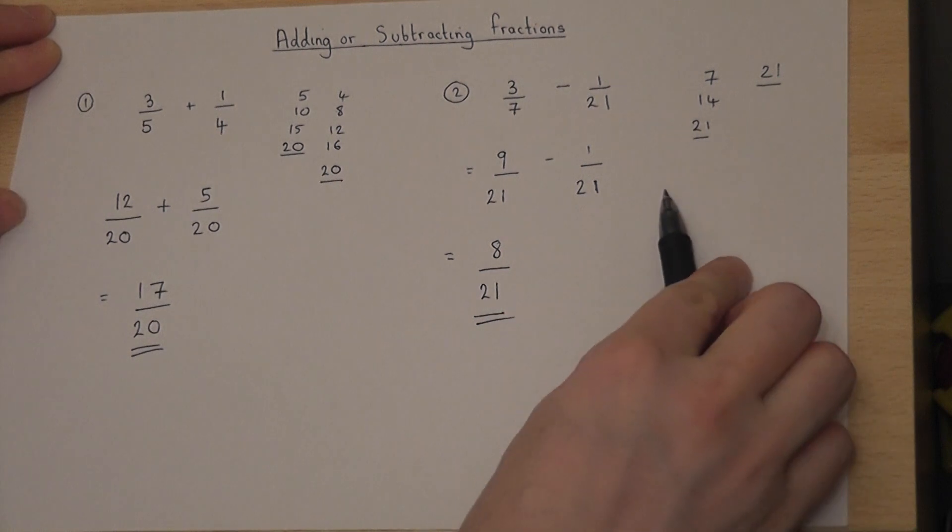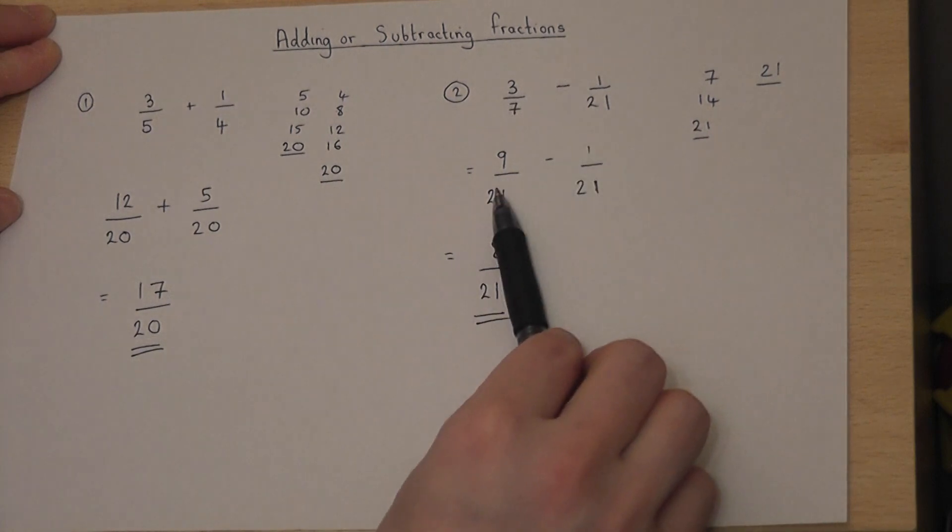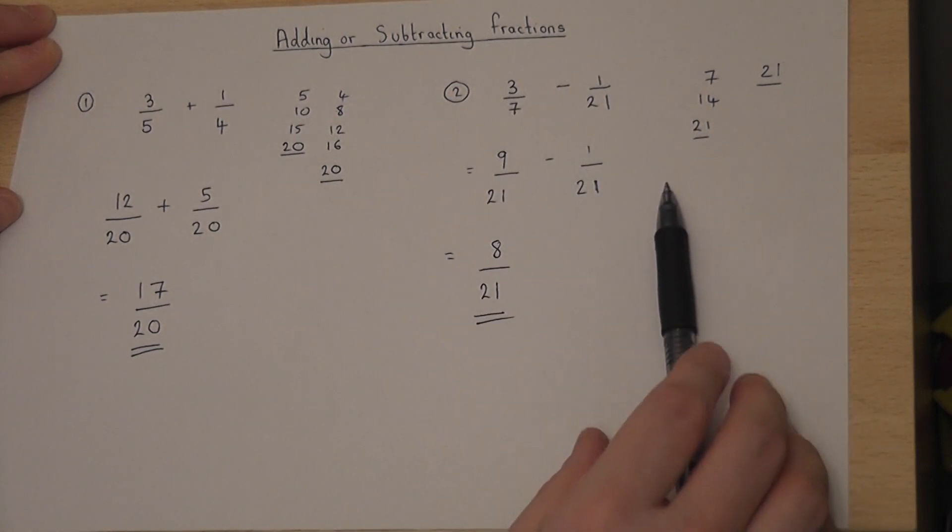So the golden rule is to ensure the bottoms of the fractions are the same by finding the lowest common multiple of the denominators.